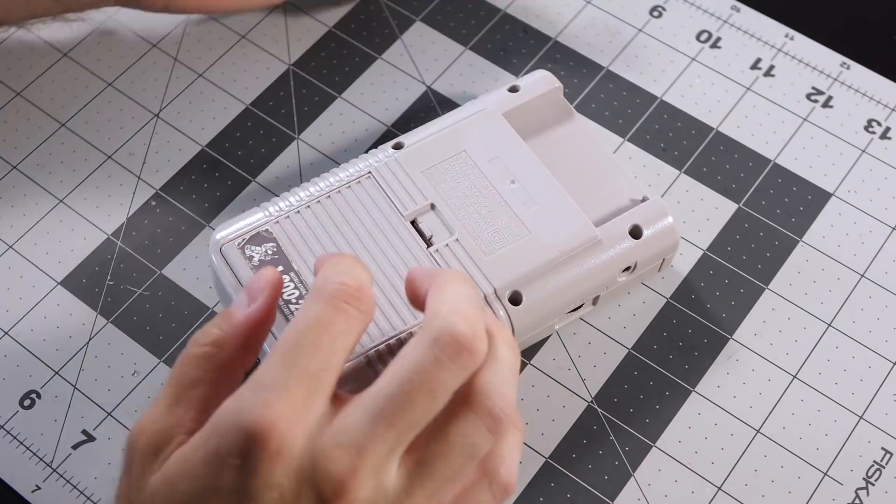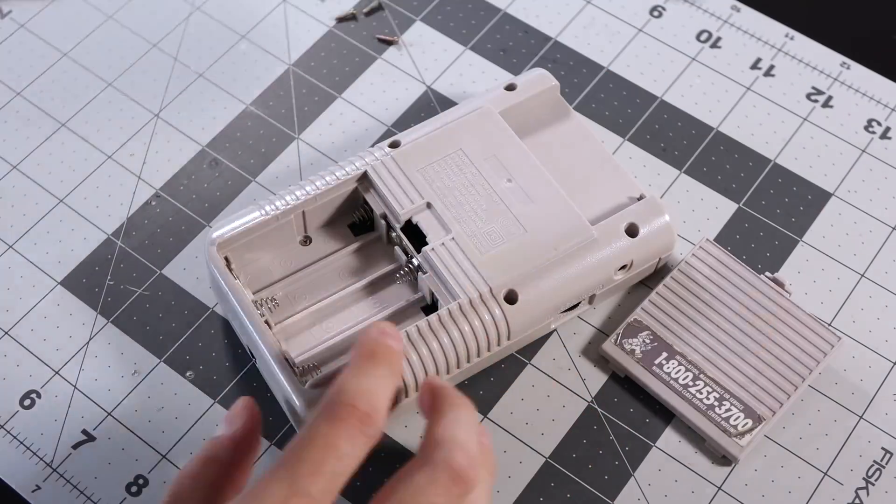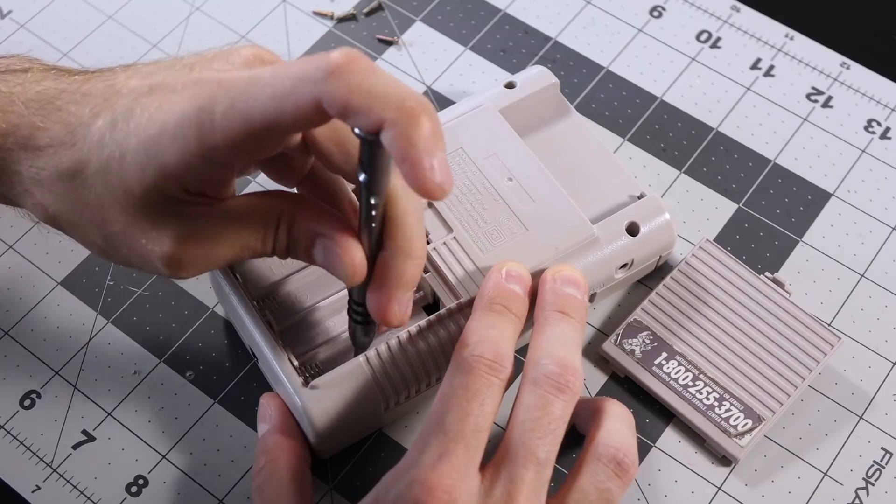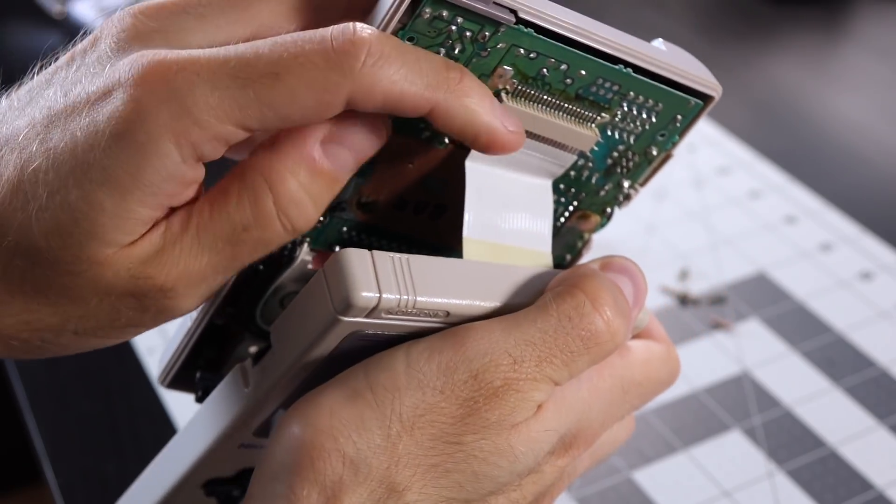Let's get it installed, then we'll talk about what it does. If you're familiar with modding a DMG, then you probably know the drill. Remove the six tri-wing screws from the back, then disconnect the ribbon cable between the two halves.